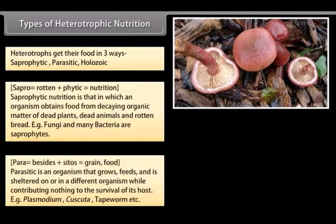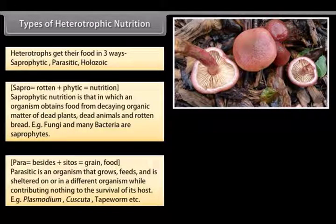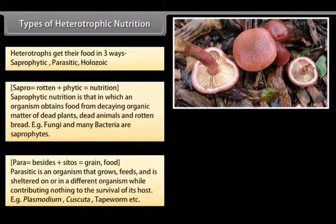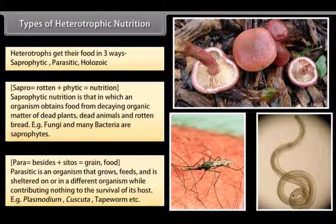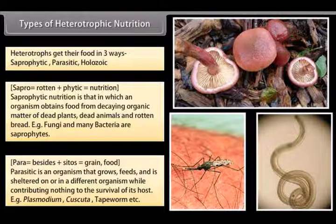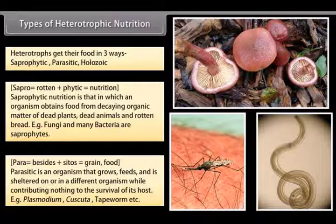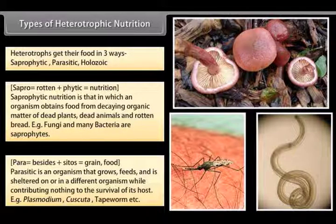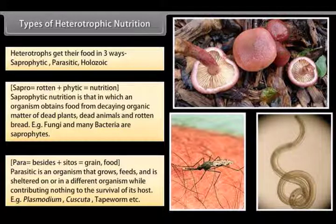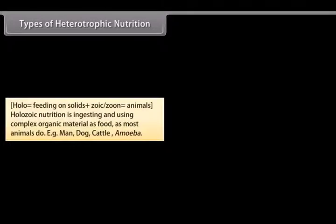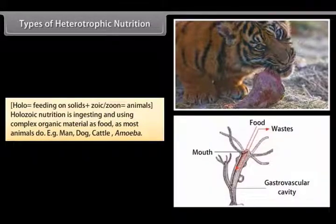A parasite is an organism that grows, feeds, and is sheltered on or in a different organism while contributing nothing to the survival of its host. Examples include plasmodium, cuscuta, and tapeworm. Holozoic nutrition is ingesting and using complex organic material as food as most animals do. Examples include man, dog, cattle, and amoeba.